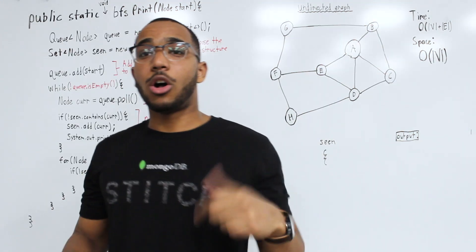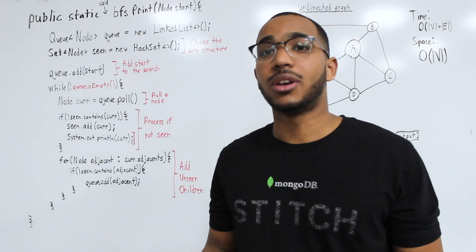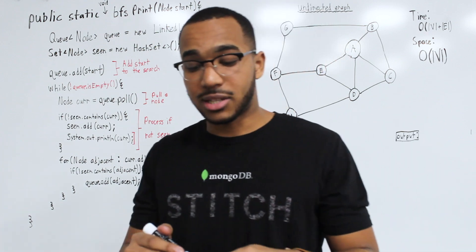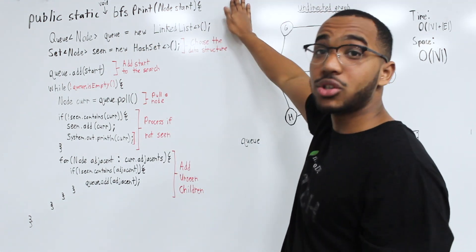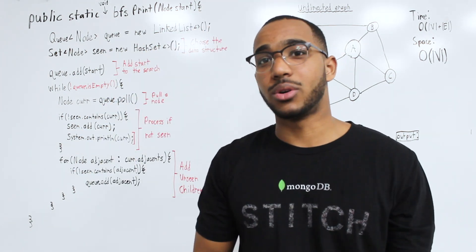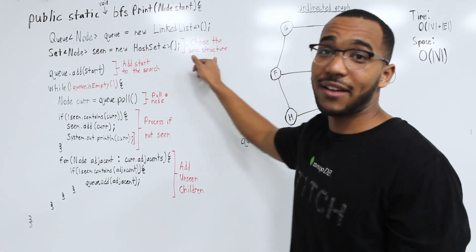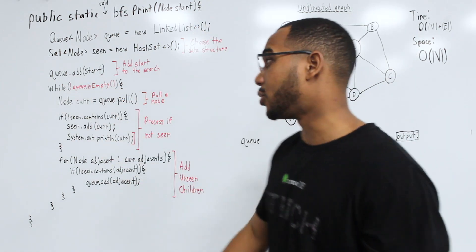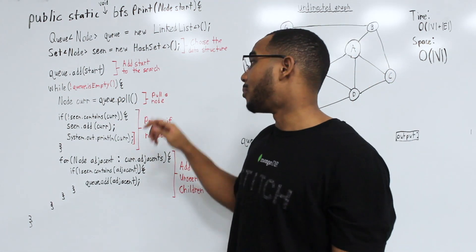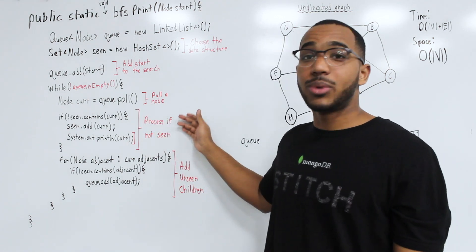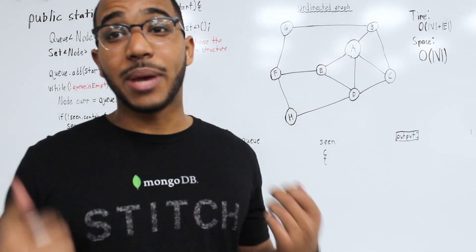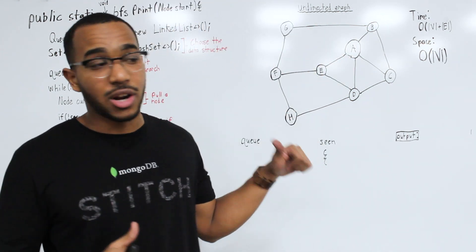All the changes between depth first and breadth first search is the data structure we use. Instead of a stack, we now use a queue with first-in-first-out behavior where the first item in is the first out, just like a line. We still have the seen hash set, we add the start node to the queue, loop while the queue is not empty, pull an item — called poll in the Java API — process it if unseen, and add unseen adjacent nodes to the queue.